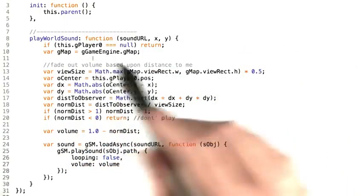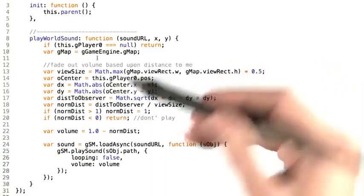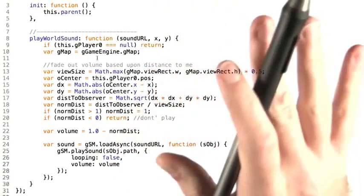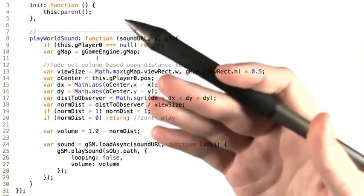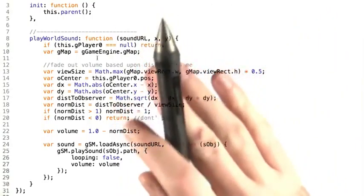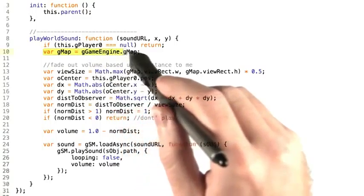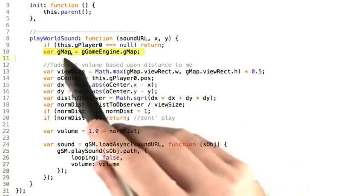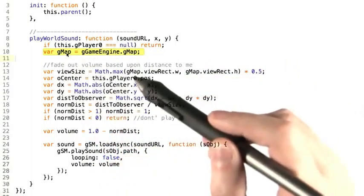First we're going to check if the player is null, just as a sanity check. If it is, then we simply return and don't worry about playing it. If there's no players to hear the sound, does the sound actually play? Then we're going to do a little bit of shorthand here just to make it easier to write by shortening gameengine.gmap to just gmap locally.